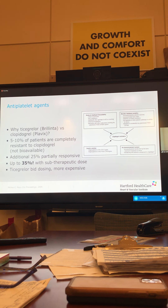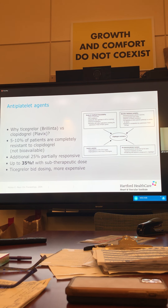One important thing to know about Brilinta is that it's twice-a-day dosing. If you're talking to a patient about ticagrelor, tell them to take it once in the morning and once in the evening. There are two doses — 60 and 90 milligrams — we usually use the 90 milligram dose BID. If we want to load a patient on Brilinta, we give them two pills — 180 milligrams. We can go over these details with you at the time.